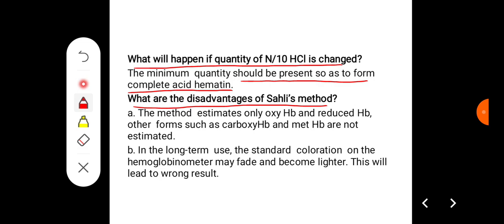What are the disadvantages of Sahli's method? One: the method estimates only oxyhemoglobin and reduced hemoglobin. Other forms of carboxyhemoglobin and methemoglobin are not estimated.